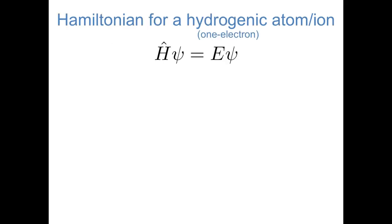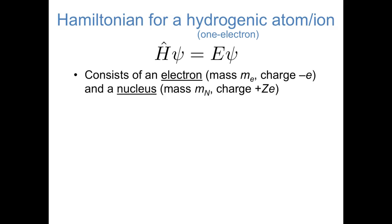Anytime we want to use the Schrödinger equation, we have to first think about what the Hamiltonian operator looks like. In this video, we're looking at what we call hydrogenic atoms and ions — atoms and ions with one electron. So this could be a hydrogen atom, a helium plus ion, a lithium 2+ ion, etc. We know that the Hamiltonian operator is typically a sum of kinetic and potential energy terms, and that's true in this case as well.